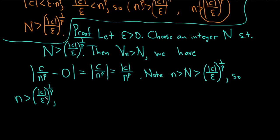Raise both sides to the p power: n to the p greater than the absolute value of c over epsilon. Multiply by epsilon and divide by n to the p, so we get epsilon greater than the absolute value of c over n to the p. We have the absolute value of c over n to the p less than epsilon.